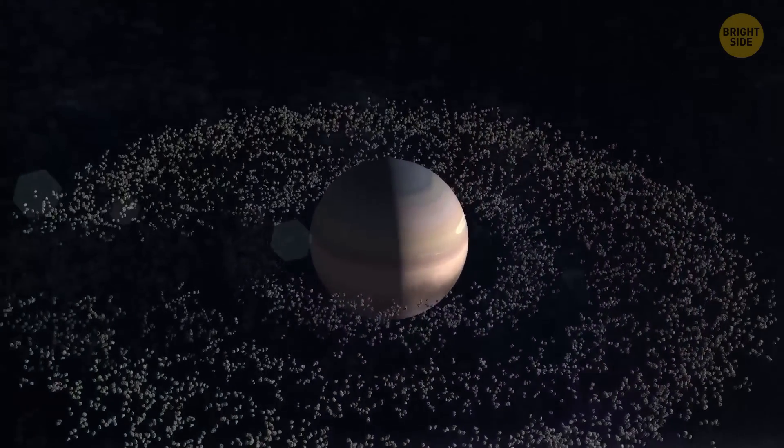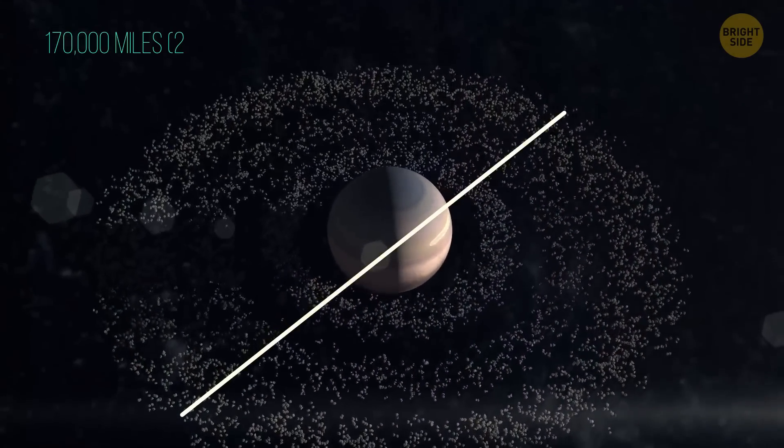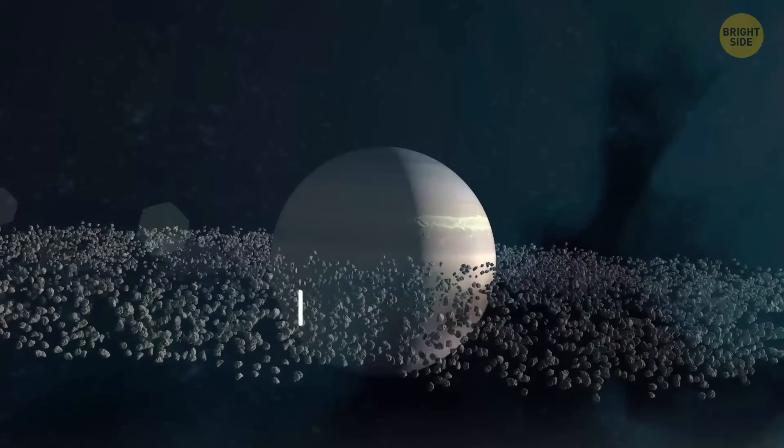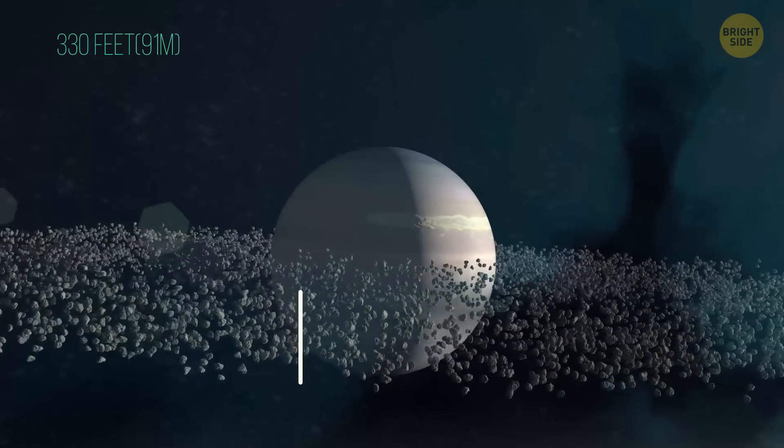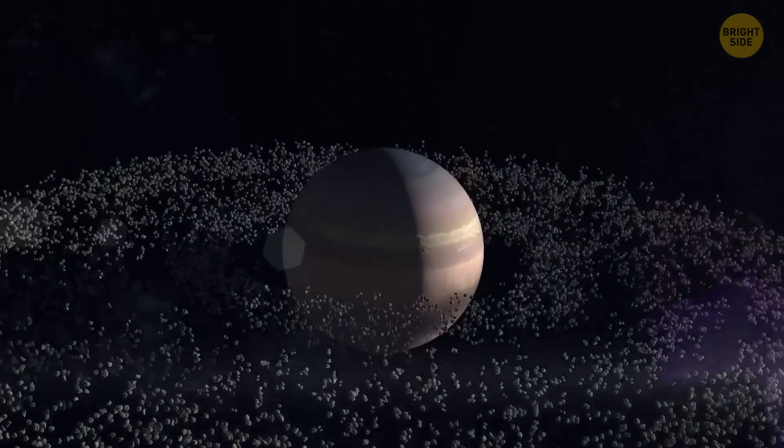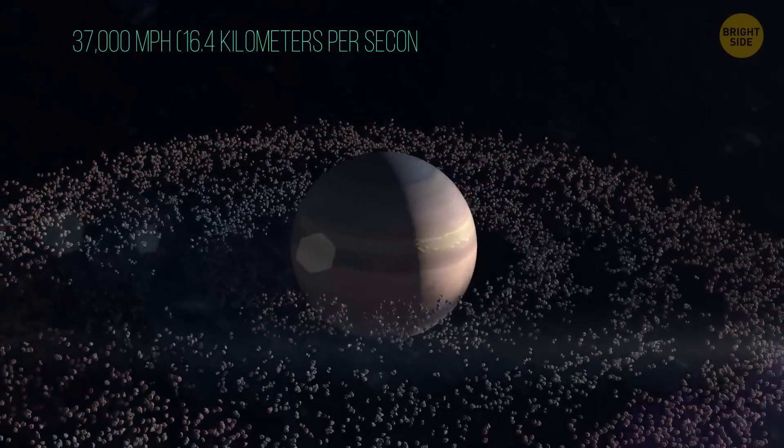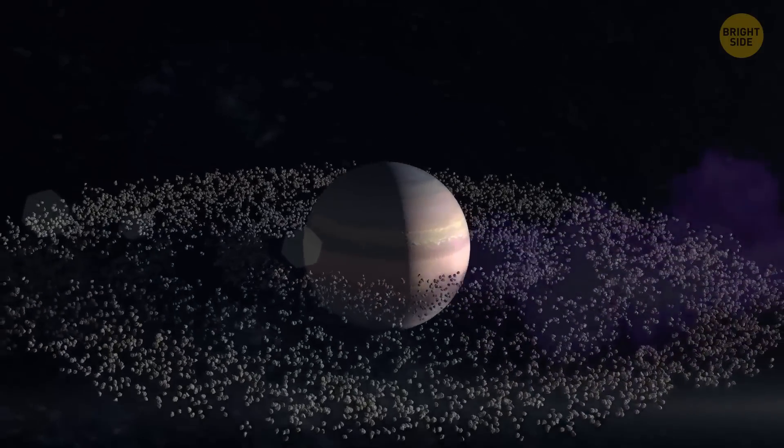The major rings have a diameter of 170,000 miles, yet their thickness does not exceed 330 feet. Saturn's slowest outermost ring spins at about 37,000 miles per hour. It's slower than the rotation of Saturn itself.